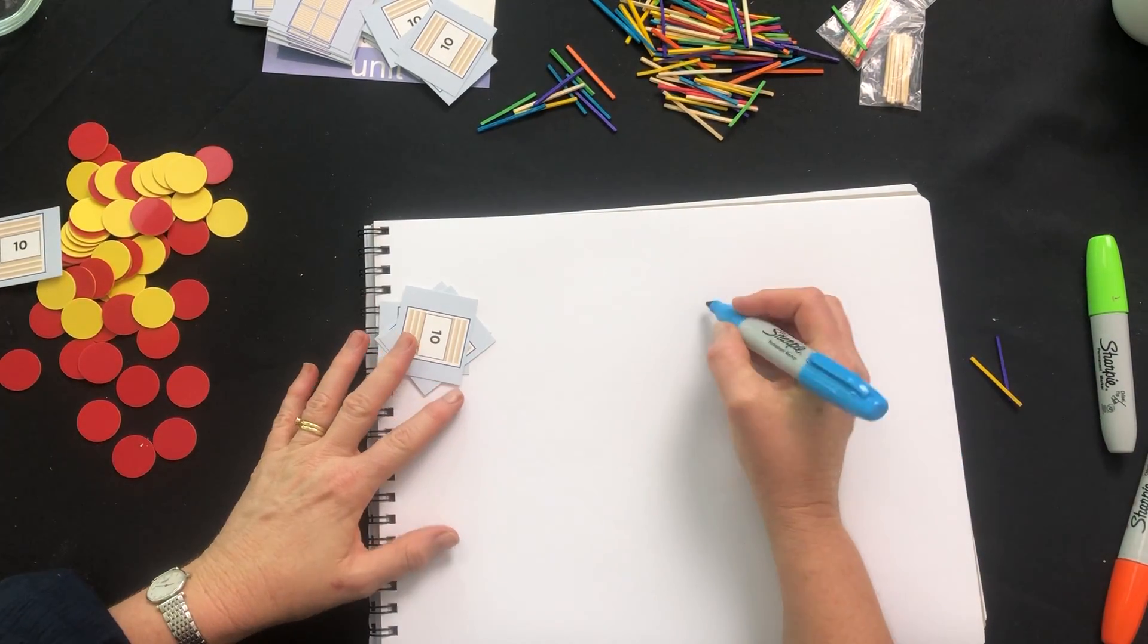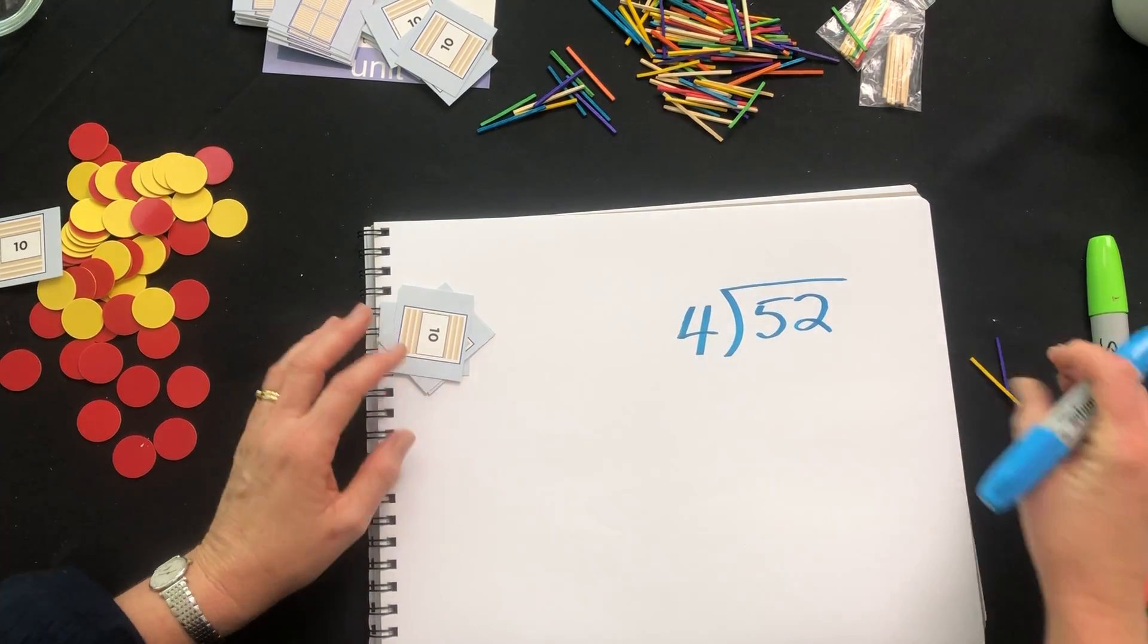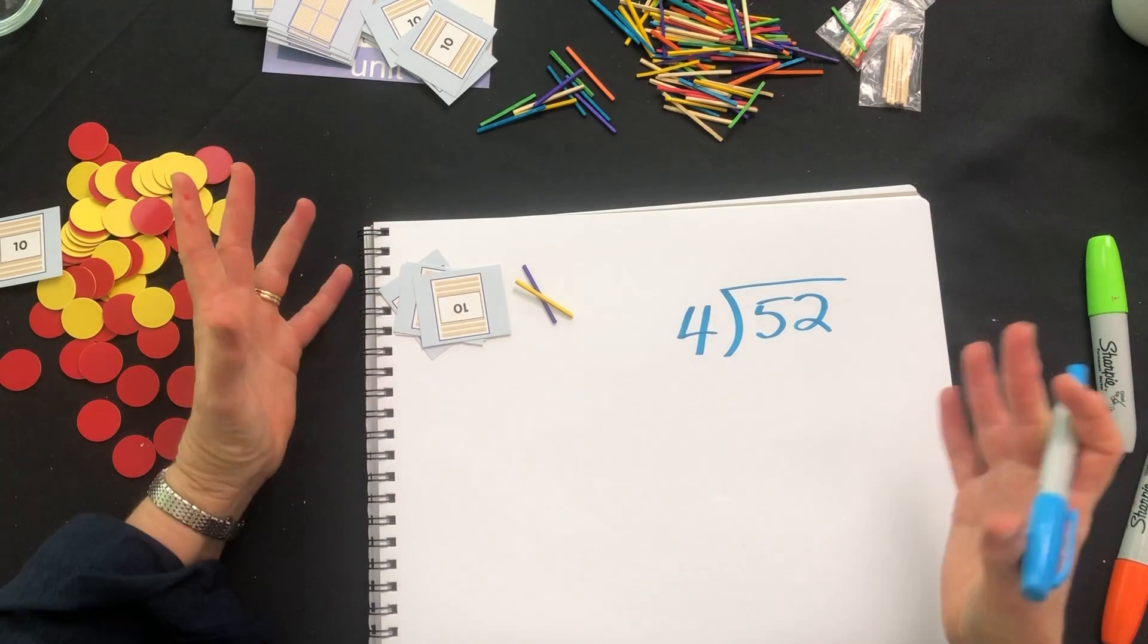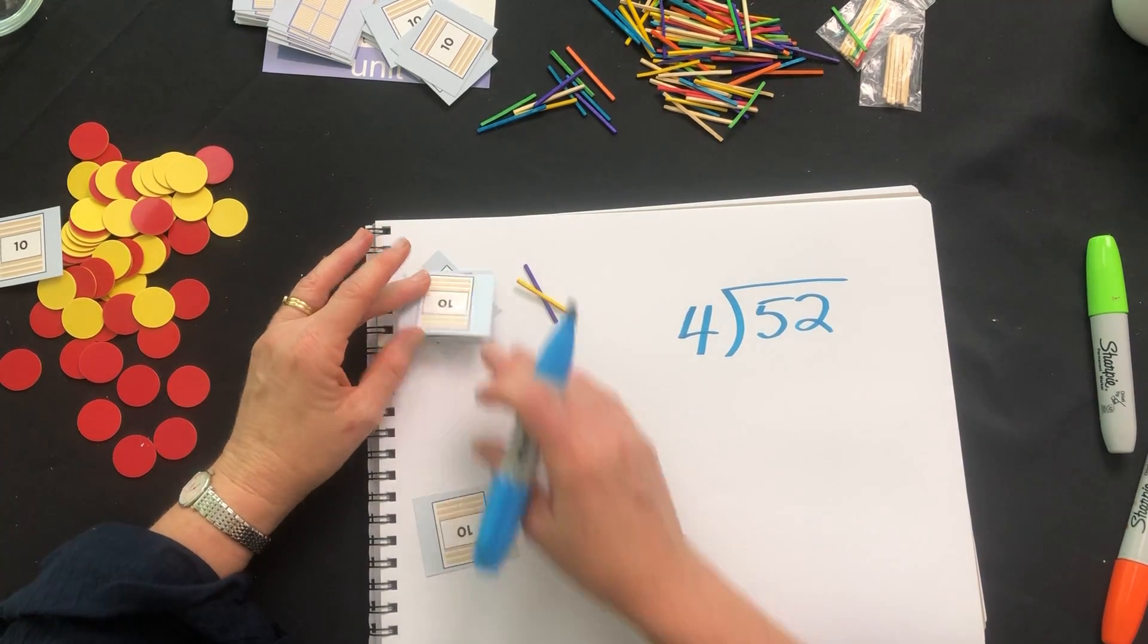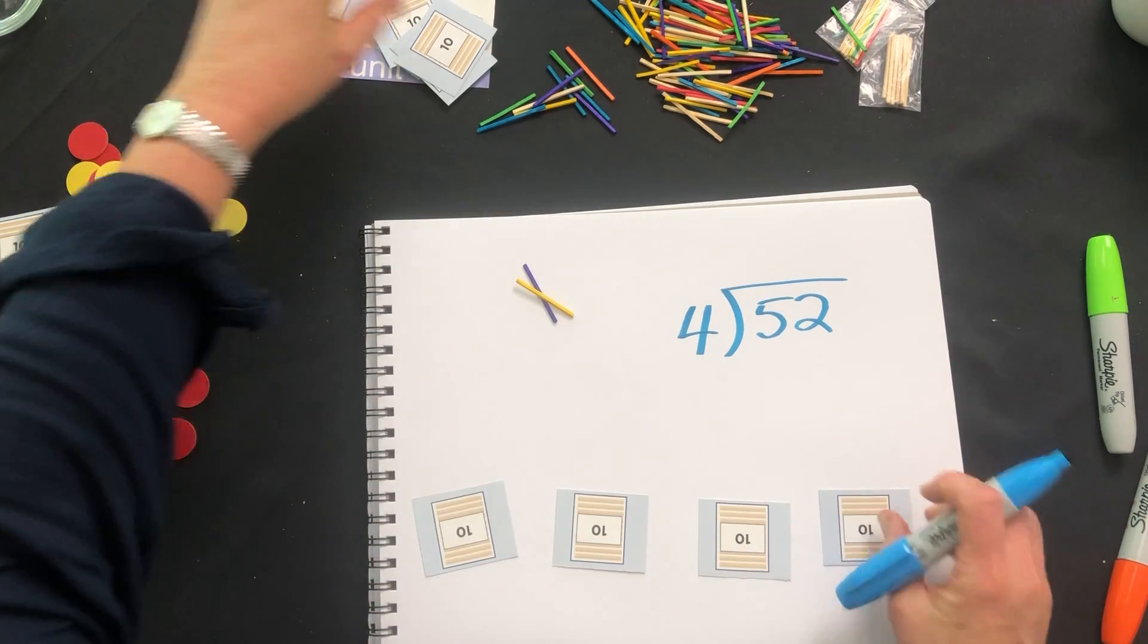So four into fifty two. Same applied. We shared our 50 into four equal groups. We need to make it 50.